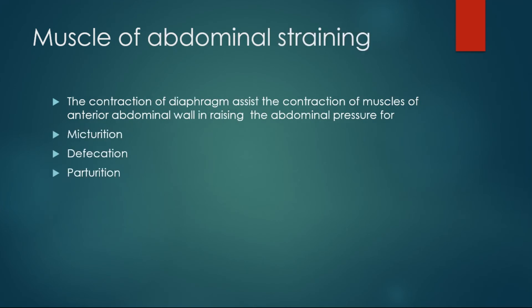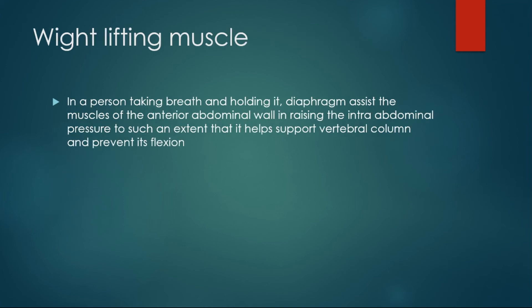Contraction of the diaphragm assists the contraction of the anterior abdominal wall muscles — when the diaphragm contracts, the anterior abdominal wall automatically contracts as well, creating pressure used for micturition, defecation, and parturition (childbirth). As a weight-lifting muscle, when a person takes a deep breath and holds it, the diaphragm assists the anterior abdominal wall in raising intra-abdominal pressure to such an extent that it supports the vertebral column and prevents its flexion.